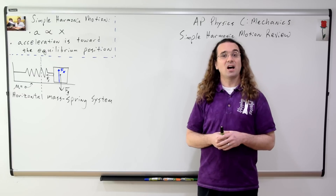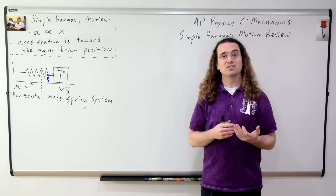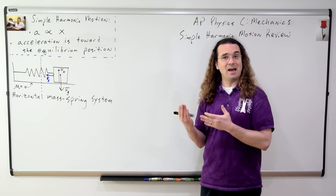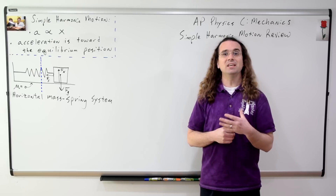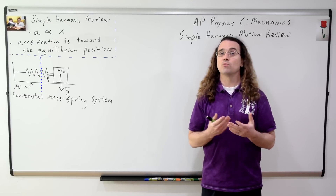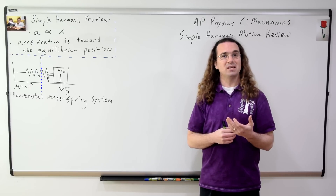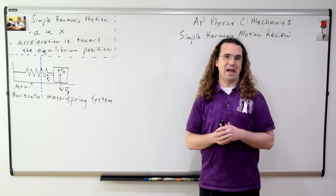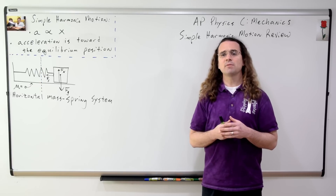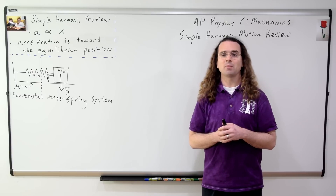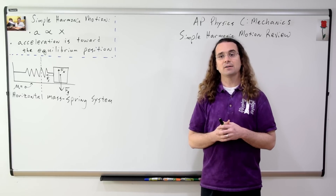The force normal is up, the force of gravity is down, and the force of the spring is directed to the left toward the vertical dotted line, which is called the equilibrium position or the rest position — where the end of the spring would be if the block were at rest. Bobby, please sum the forces in the x direction on the block and solve for the acceleration of the block.